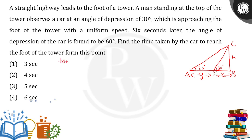Now, taking the larger triangle with tan 30 degrees: tan 30 = h upon (x + y), so x + y = root 3 times h. For the smaller triangle, tan 60 degrees = h upon x, which is much simpler.